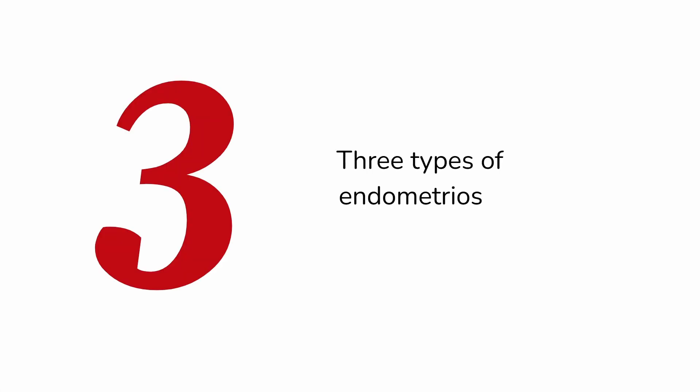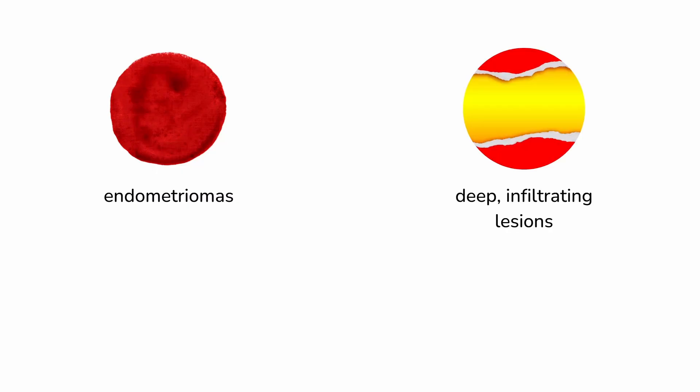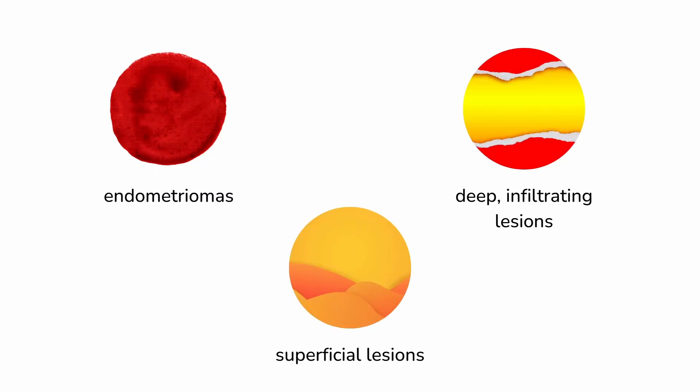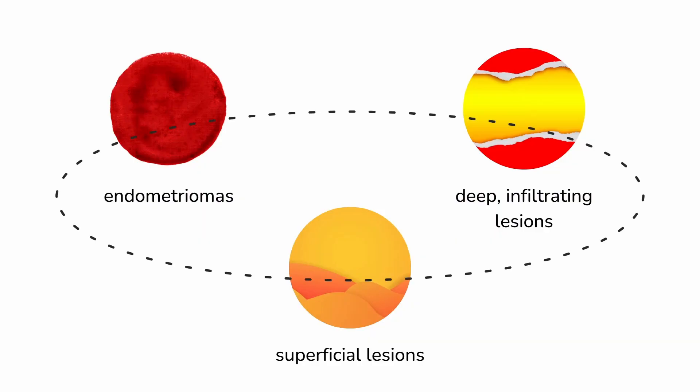Broadly speaking, there are three types of endometriosis lesions: endometriomas, deep infiltrating lesions, and superficial lesions. In this episode, I'll bring you some research updates about the first two types.